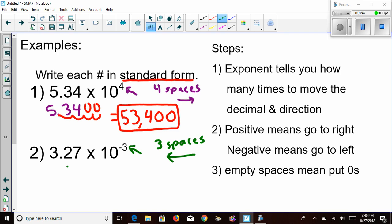So 3.27. I'm going to grab my decimal and move it one, two, three spaces to the left. And I have to fill in these spaces with zeros, giving me a new number in standard form, which is 0.00327.